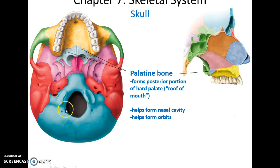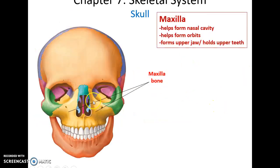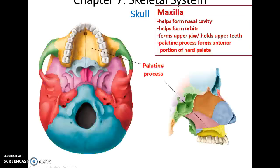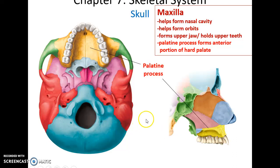In an inferior view of the skull, the two palatine bones help form the posterior portion of the hard palate — the roof of the mouth — which means they also help form the floor of the nasal cavity. The two maxilla bones help form the lateral walls of the nasal cavity and the floor of the orbits; they also hold the upper teeth. The palatine process of the maxilla forms a joint with the palatine bone, and together they form the hard palate.